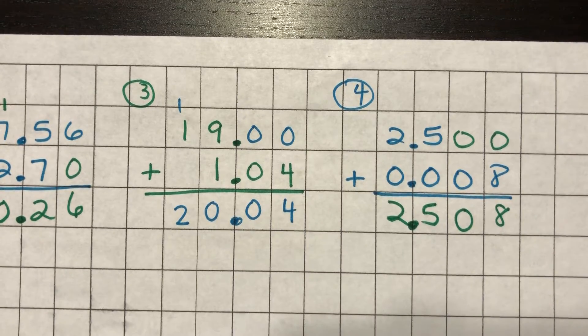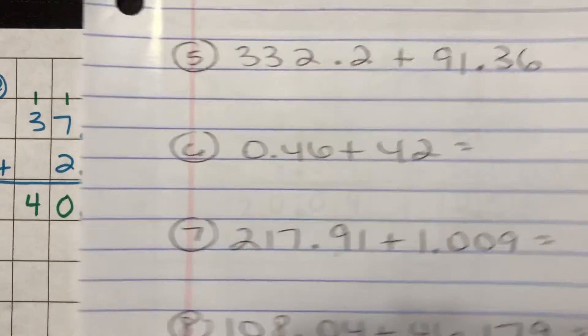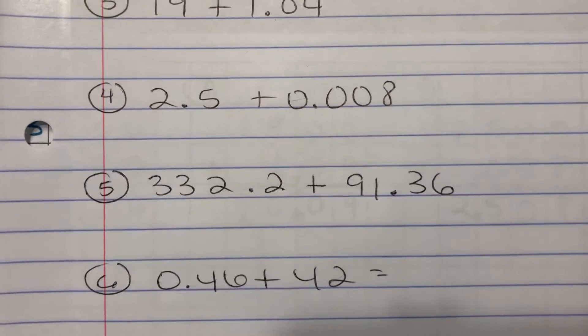Alright. We have eight total. We're going to do four more. Alright. So number five is what I'm on right now.